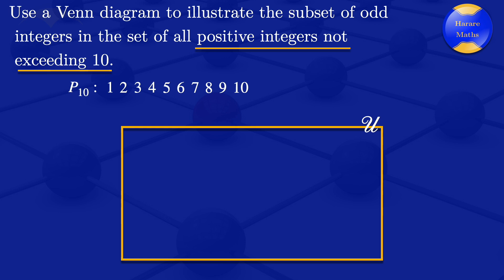Subsets of the universal set are represented by circles. So I'll draw a circle and this circle will be representing the set of positive integers. So I'll say P10, positive integers not exceeding 10.